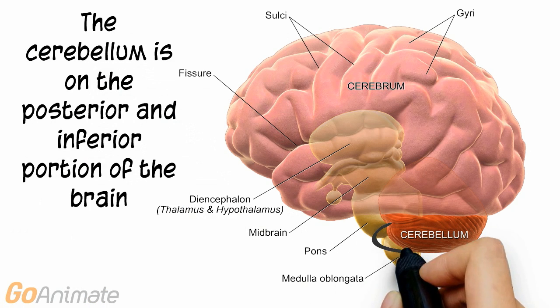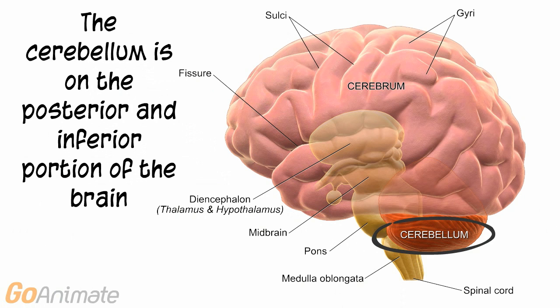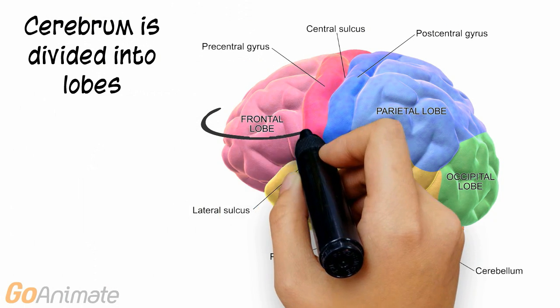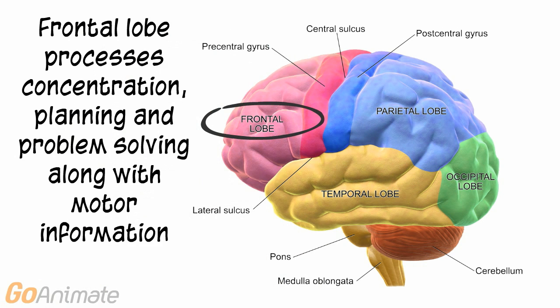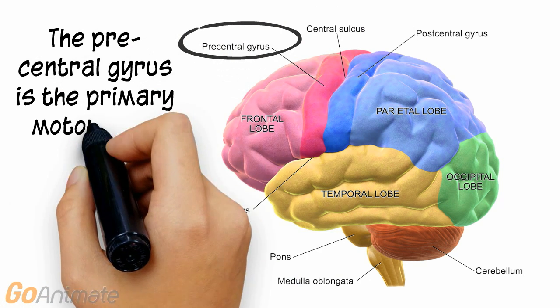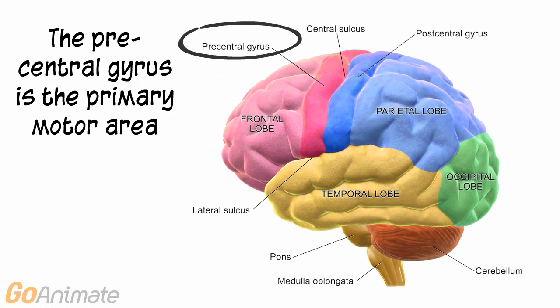The cerebellum is on the posterior inferior aspect of the brain. The cerebrum is divided into lobes. The frontal lobe processes concentration, planning, and problem solving, along with motor information. The precentral gyrus on the frontal lobe is known as the primary motor area.